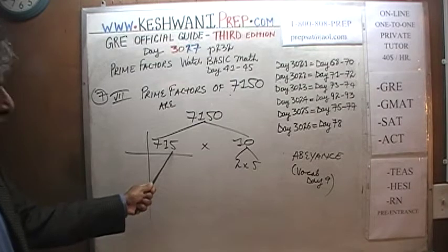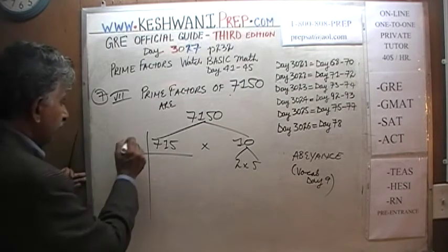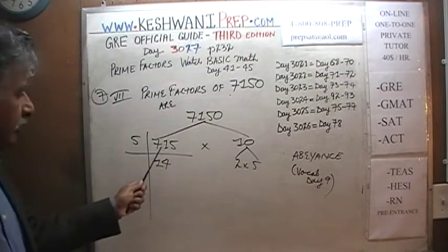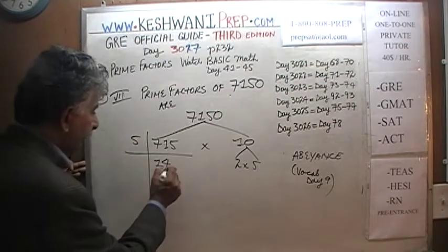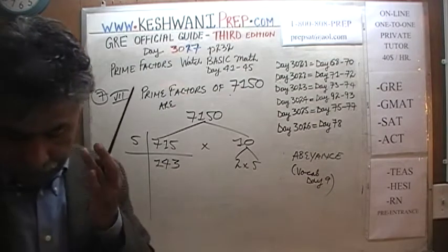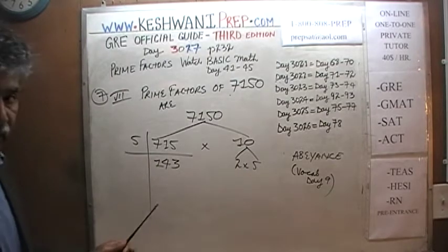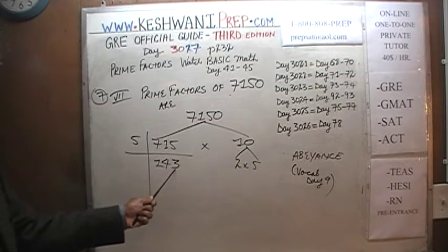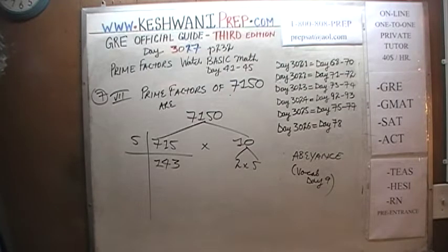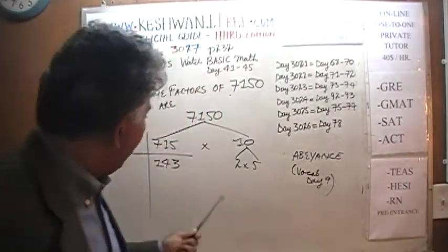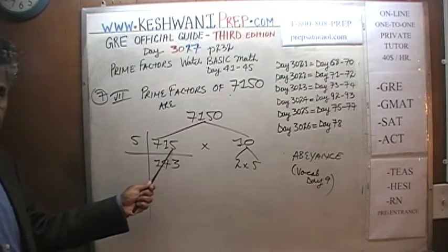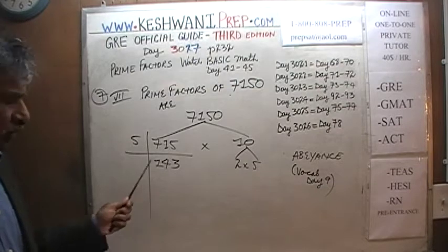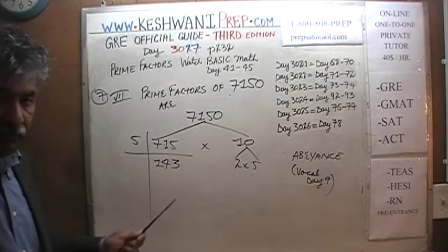For 715: 7 + 1 + 5 = 13, so it's not divisible by 3. But it ends in 5, so it's divisible by 5. 715 ÷ 5 = 143. Now 143: it's not divisible by 2, 3, 5, or 7. The next prime number is 11. 143 ÷ 11 = 13. So 715 = 5 × 11 × 13.